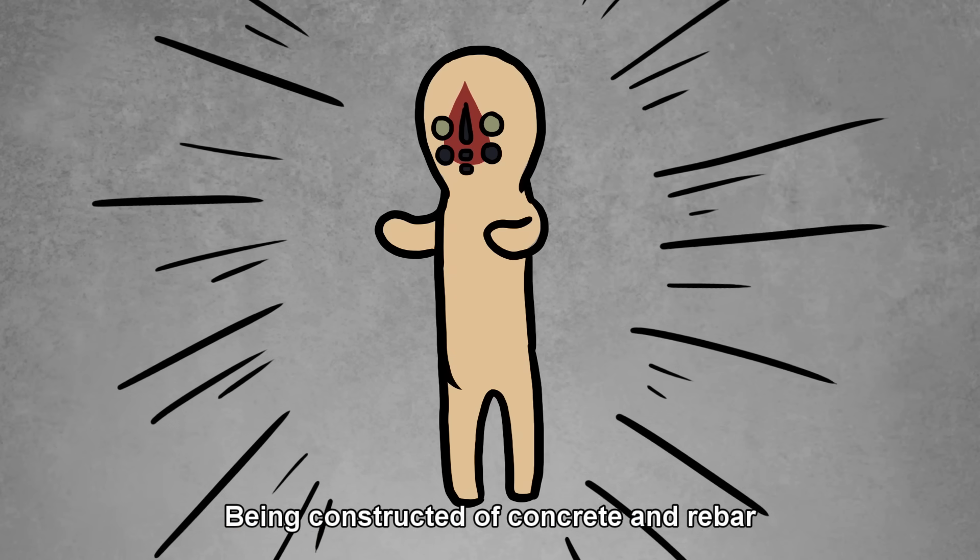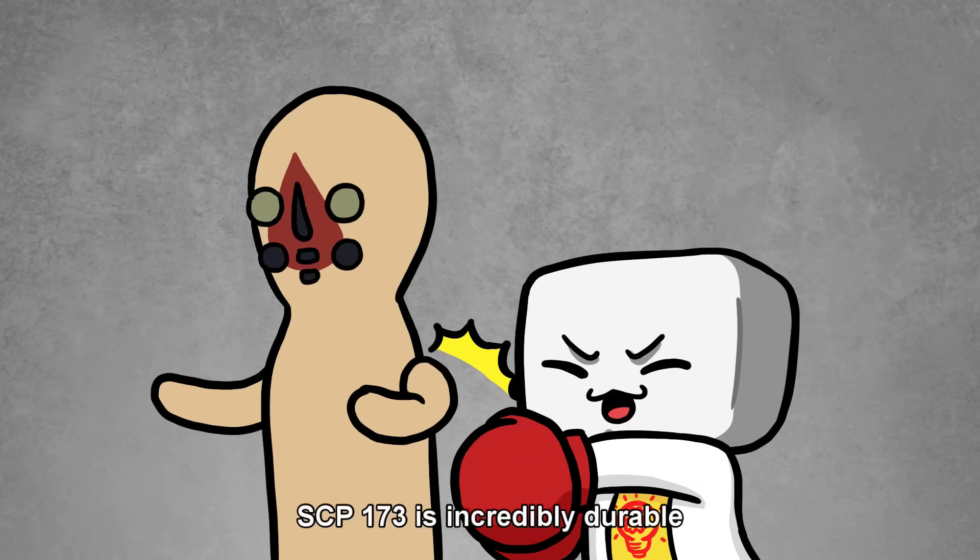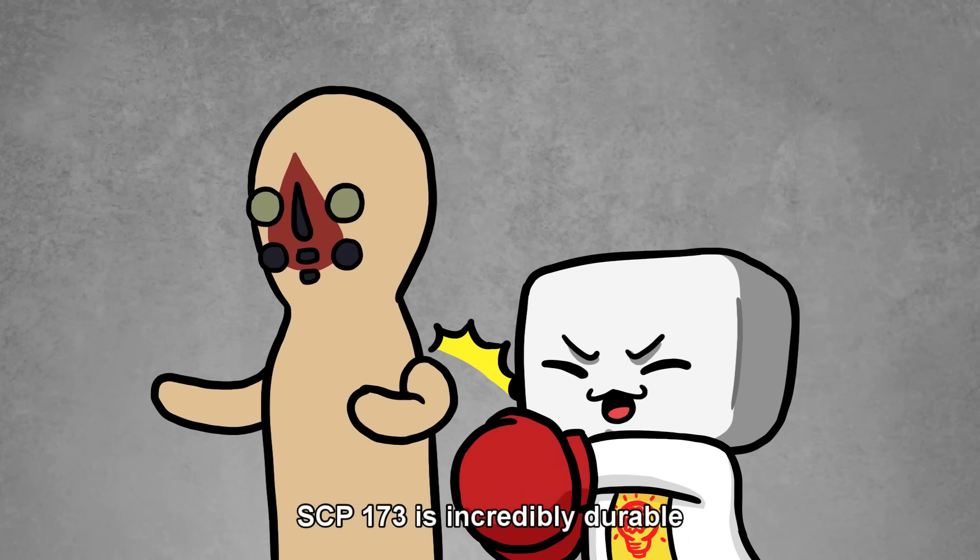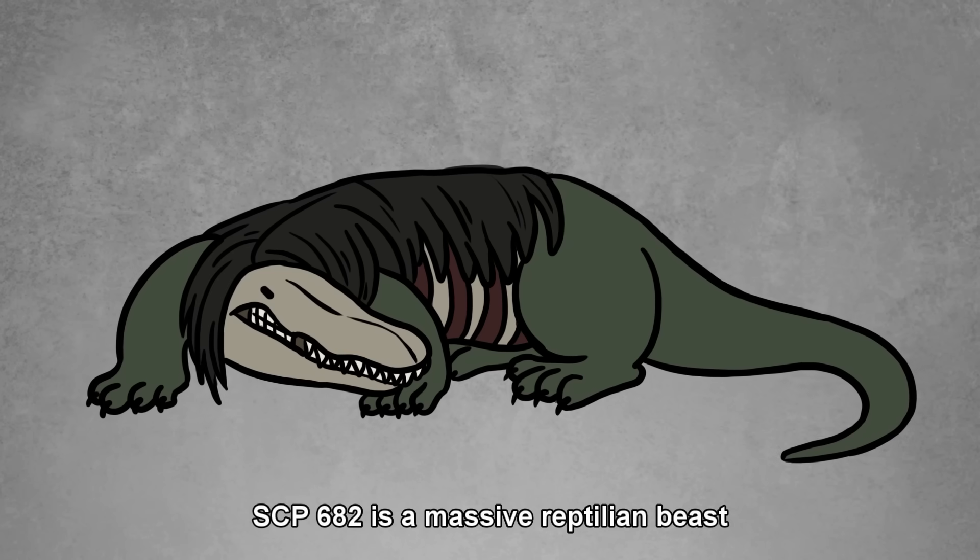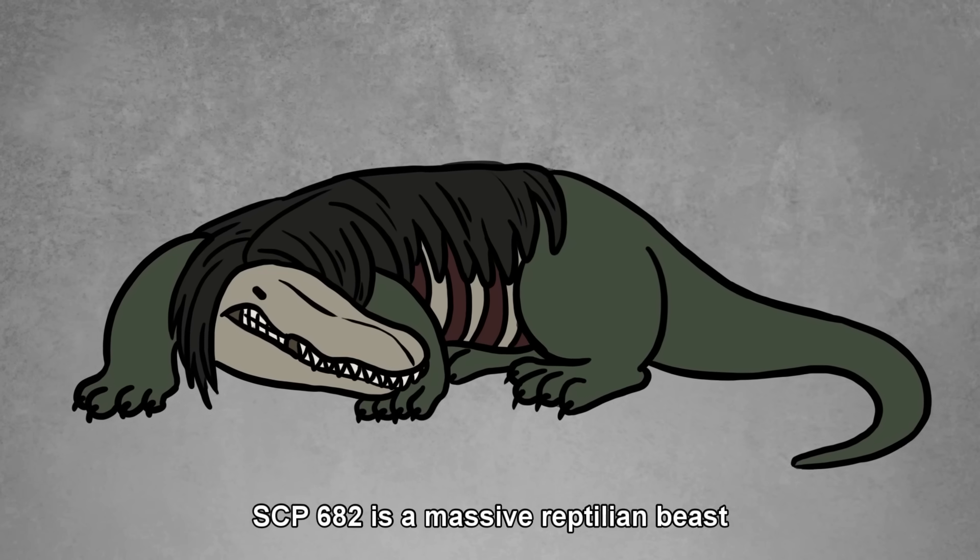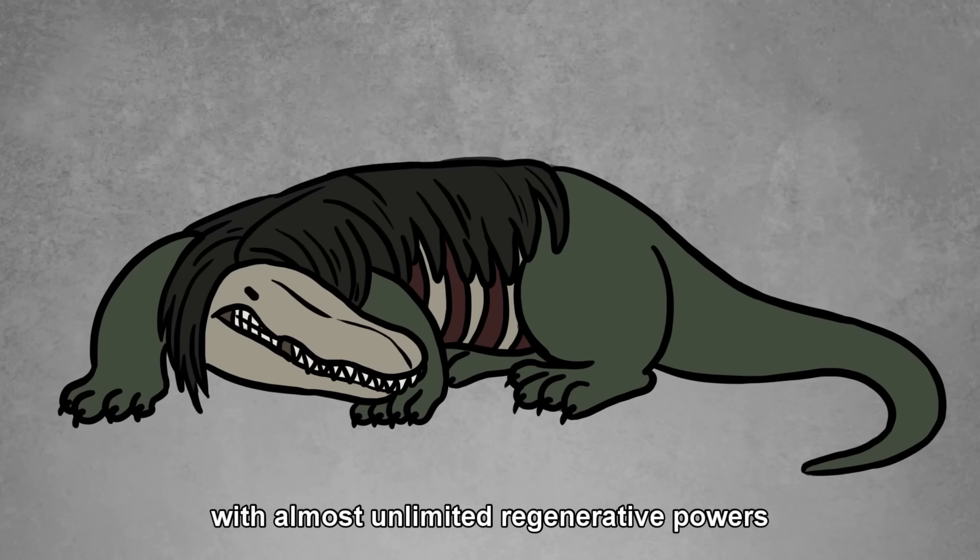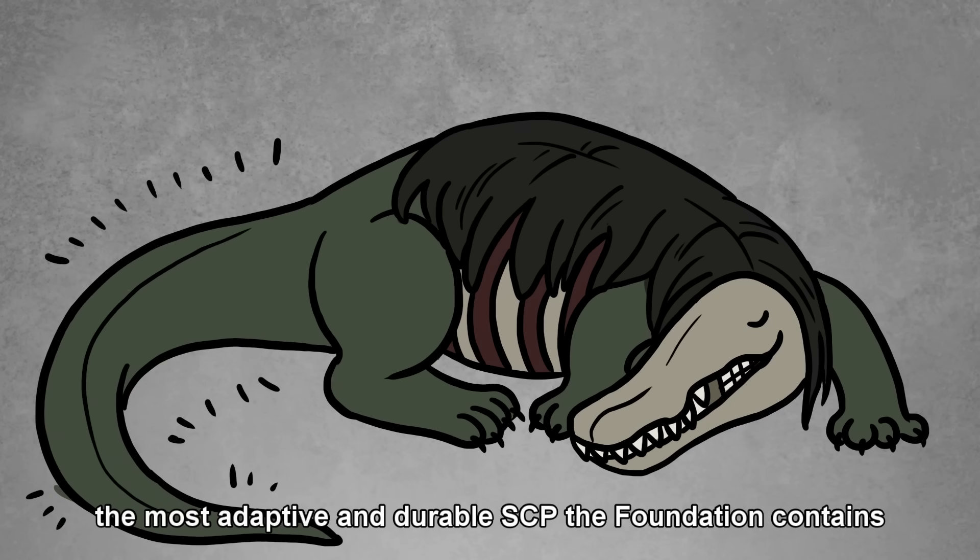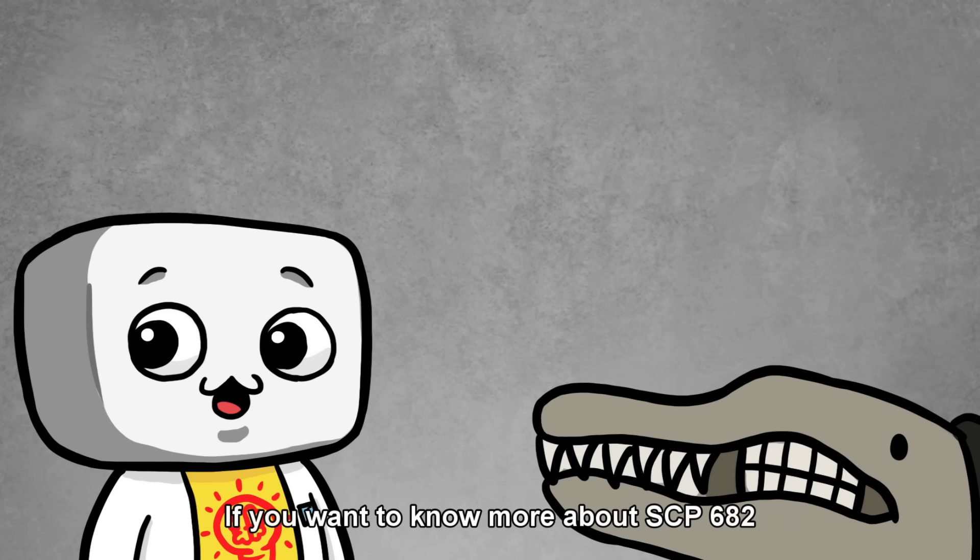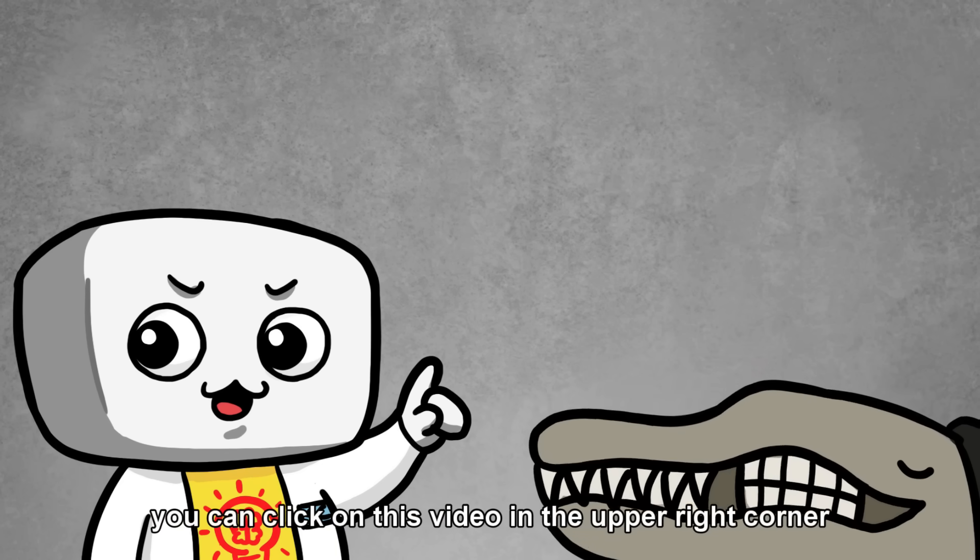Being constructed of concrete and rebar, SCP-173 is incredibly durable, able to hold itself in a fight against SCP-682. SCP-682 is a massive reptilian beast with almost unlimited regenerative powers that is widely considered the most adaptive and durable SCP the Foundation contains. If you want to know more about SCP-682, you can click on this video in the upper right corner.